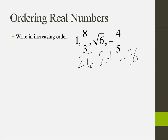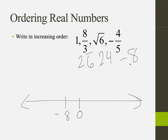Now let's order these on a number line. I've got 0 here. Negative 0.8 would be right over here. Then 1 would be next. Then 2.4 is going to be next, and then 2.6 just after that — whether that's 2.6 repeating or 2.67, depending on how you round it. So: negative 0.8, 1, 2.4, and 2.6 repeating, or 8 thirds.